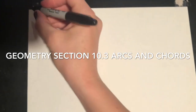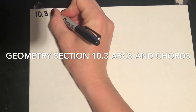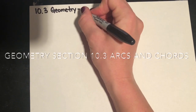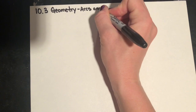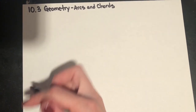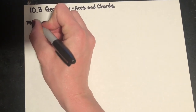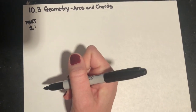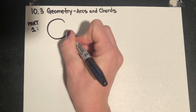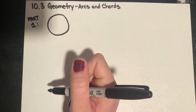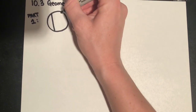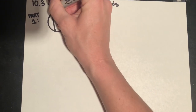Hello folks, I'm going to be doing 10.3 for you for geometry, and this is all about arcs and chords. This is a three-part lesson, so I'm going to divide the parts up to make it pretty simple for you guys. We're going to have circles drawn since we are in the circles unit. Our first circle is going to have two chords, and I'm going to label these chords AB and CD.